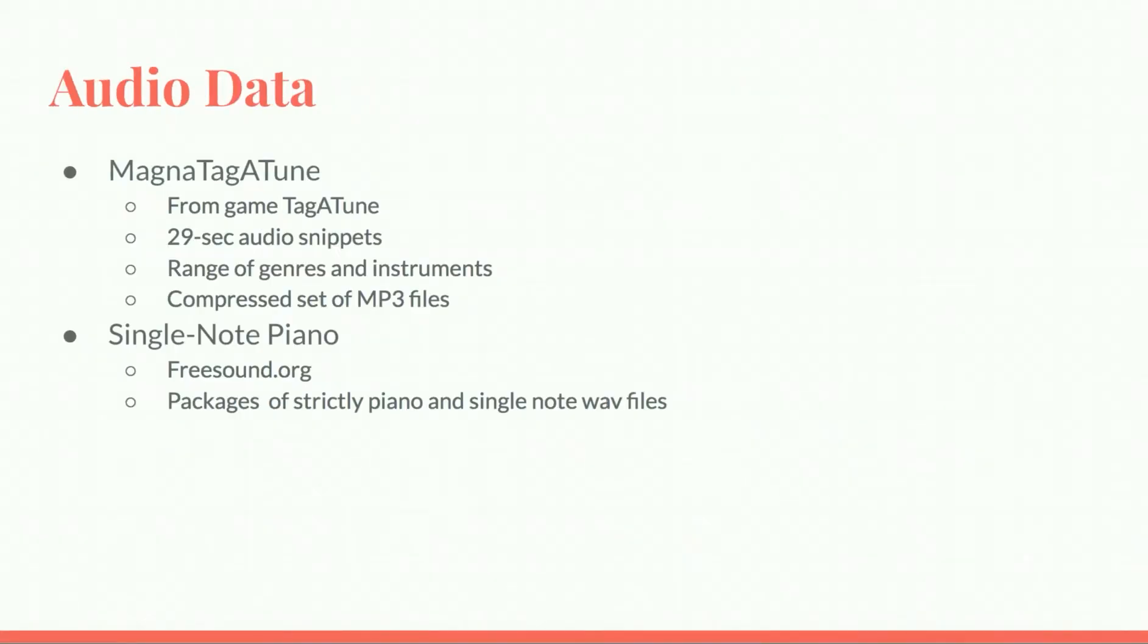The data we used for training was called the MagnaTagATune dataset, and it came from a game called TagATune. It consists of 29-second audio snippets over a range of genres and instruments. The samples came in a compressed set of MP3 files, which we then had to convert to WAV files. Using our vanilla GAN, we found that using this dataset, the audio files were way too large to be processed accurately, so we attempted using only single-note piano samples. On a site called freesound.org, there are several packages of strictly piano and single-note WAV files that we downloaded and used for training.